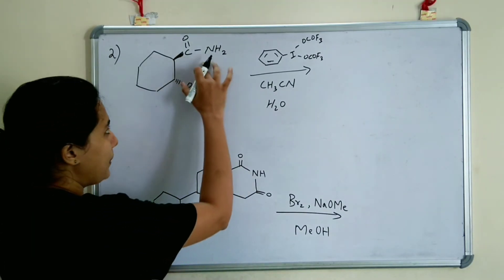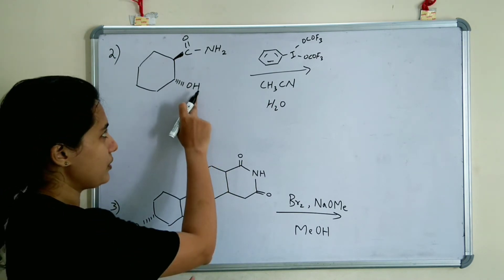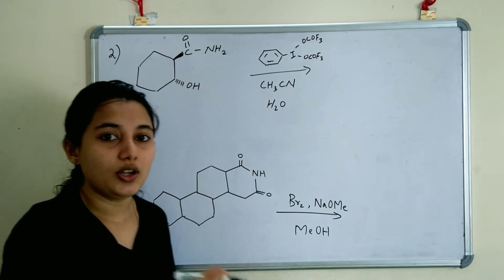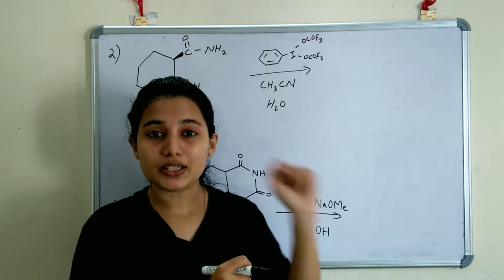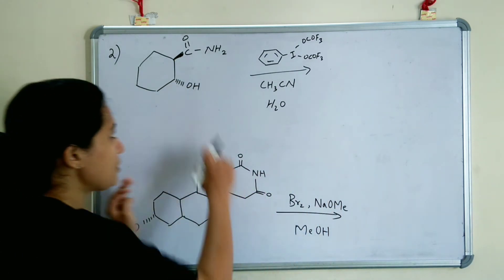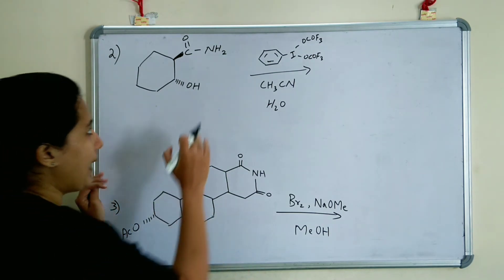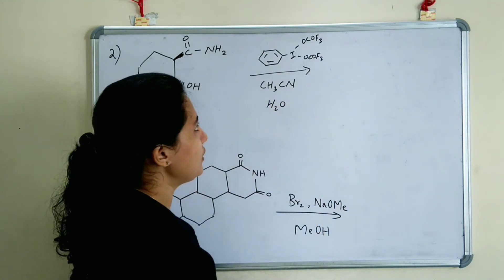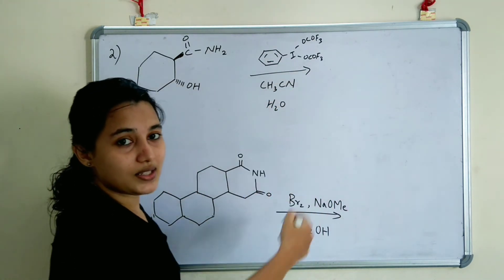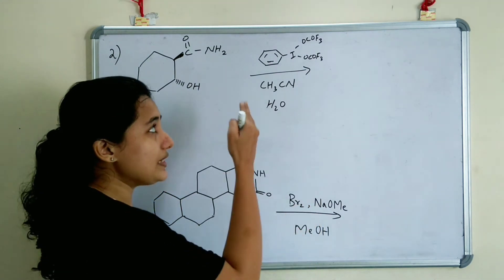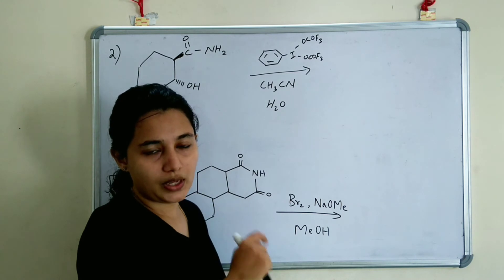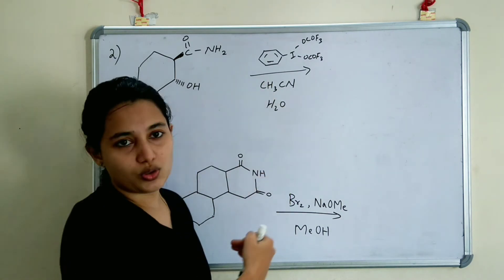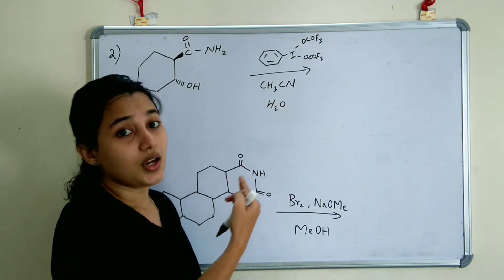In the second example, a cyclohexane ring has an amide group and an OH substituent below the plane, while the migrating group is above the plane. In Hoffman Rearrangement, the stereochemistry of the migrating group is always retained — it remains above the plane in the product. The reagent used is bis(trifluoroacetoxy)iodobenzene, which can replace Br2, similar to NBS or lead tetraacetate.